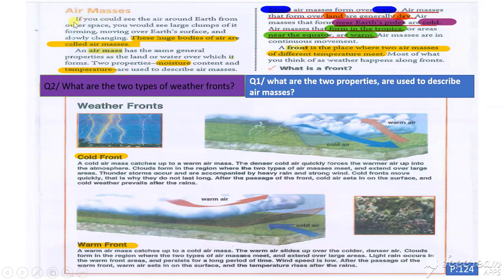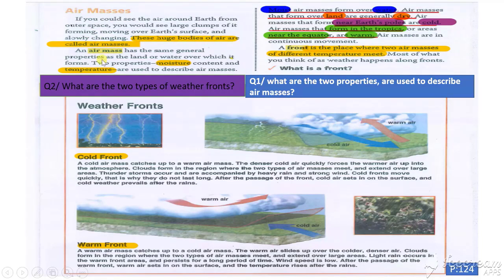Air Masses. If you could see the air around Earth from outer space, you would see large clumps of it forming, moving over Earth's surface, and slowly changing. Do you remember the definition of the air mass? What are the air masses? These huge bodies of air are called air masses.